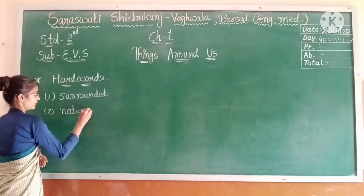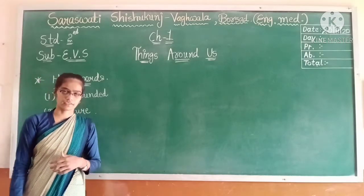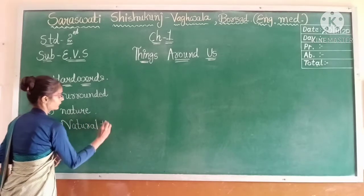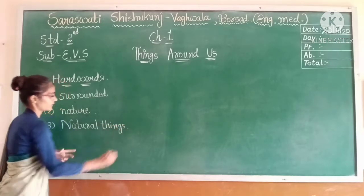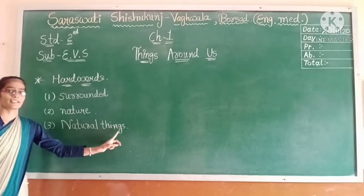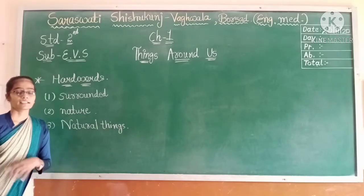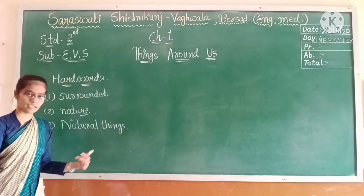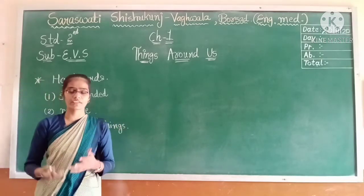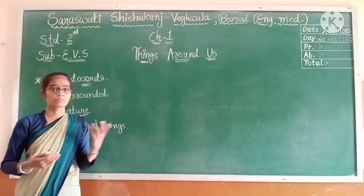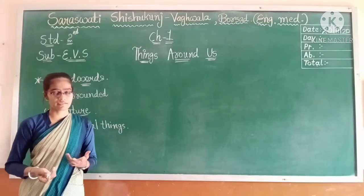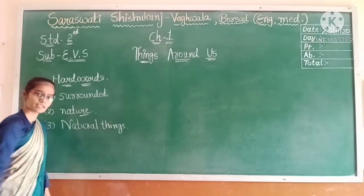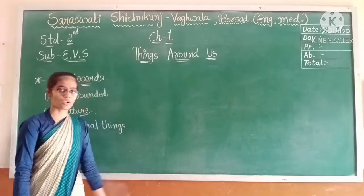Next word: N-A-T-U-R-E — nature. Then N-A-T-U-R-A-L — natural. Natural things means they are part of nature. Which things are part of nature? Sun, moon, mountains, water, plants, animals — they are called natural things. Why are they called natural things? Because they are part of nature. That is called natural things.